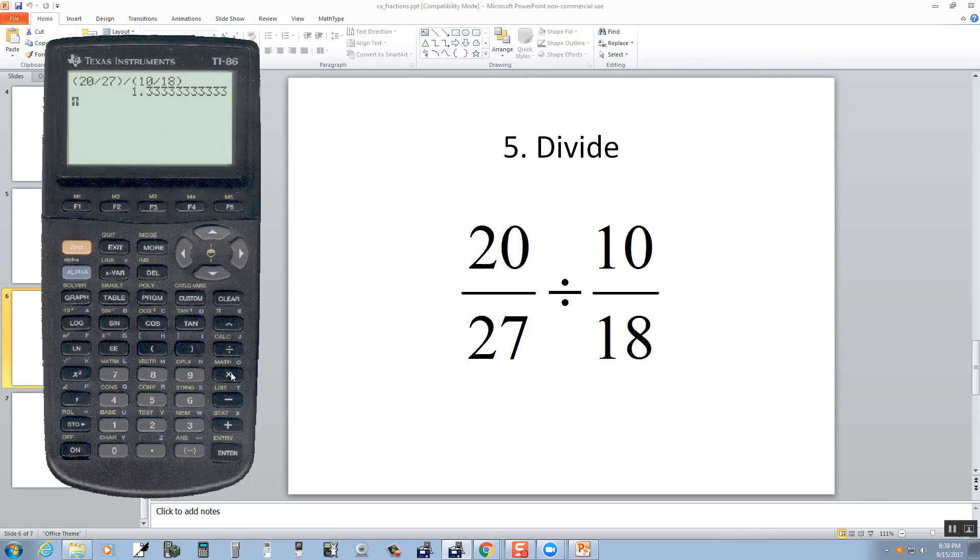So again, I'm going to go do 2nd. Multiply for math. Choose miscellaneous, F5. Choose more to go to the second page here. And I want to choose F1 for fraction. And then press enter. So answer will be 4 thirds.